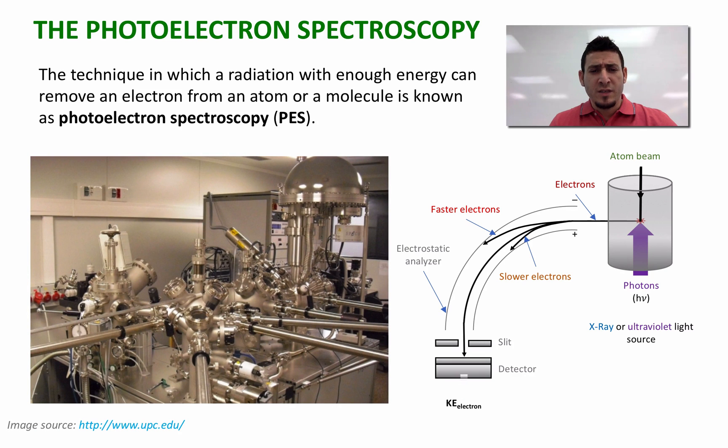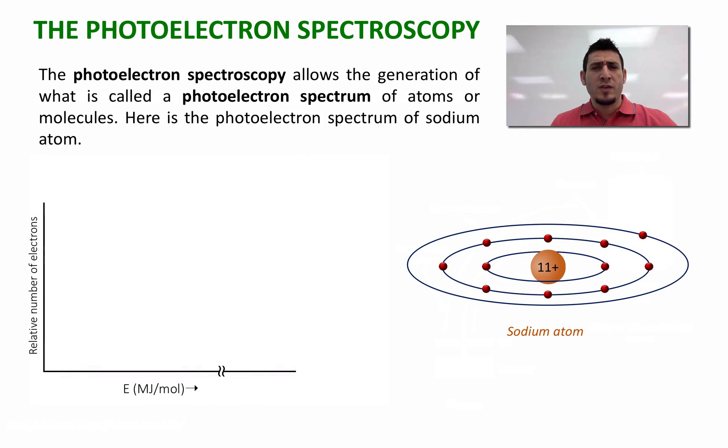Now here is a picture of a real photoelectron spectrometer. As you can see, it's not a simple device. Now using such a device, we can generate what we call the photoelectron spectrum. I'm going to show you now how we can generate the photoelectron spectrum of sodium.